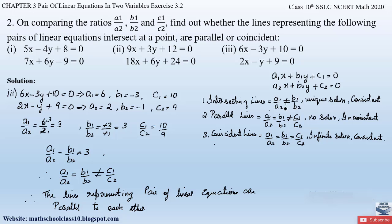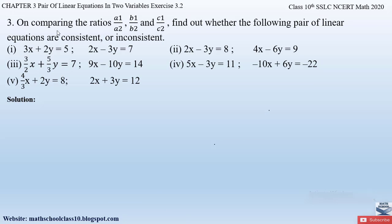To summarize: for intersecting lines, a1/a2 ≠ b1/b2; for parallel and coincident lines, a1/a2 = b1/b2, but the difference lies in c1/c2 — for parallel lines it is not equal to c1/c2, while for coincident lines it is equal. You must know these ratios well to solve such problems. If you have doubts, comment below. In the next video I'll solve question number three from Exercise 3.2. Please like, subscribe, and hit the bell button.